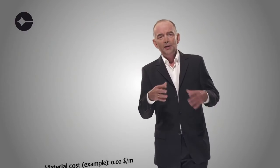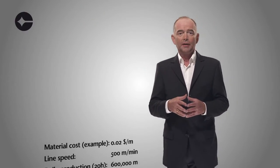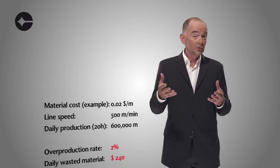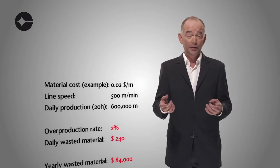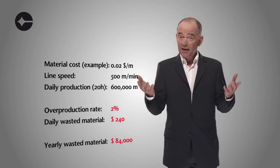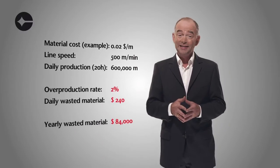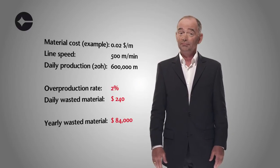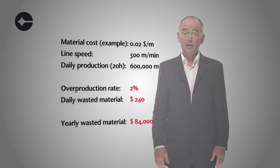Consider the following challenge. Using conventional length measurement methods, the product is oversupplied by typically 2%, due to inaccuracies of the tachometer wheel. This may lead to unnecessary costs of many tens of thousands of dollars per year. All this money could be saved by using a Polytech LSV.